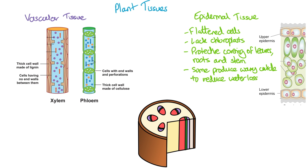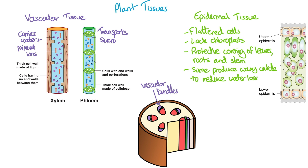Vascular tissue is organised into vascular bundles in the stem. The xylem tissue carries water and mineral ions up the plant from the roots to the leaves. The phloem tissue transports sucrose produced from photosynthesis from the leaves to roots, flowers, shoots, and any other plant part that requires that sucrose.